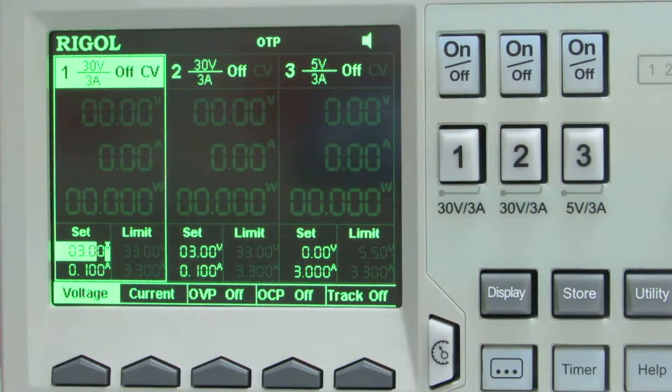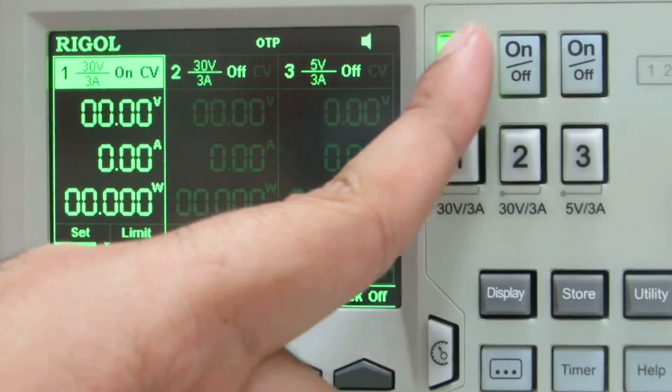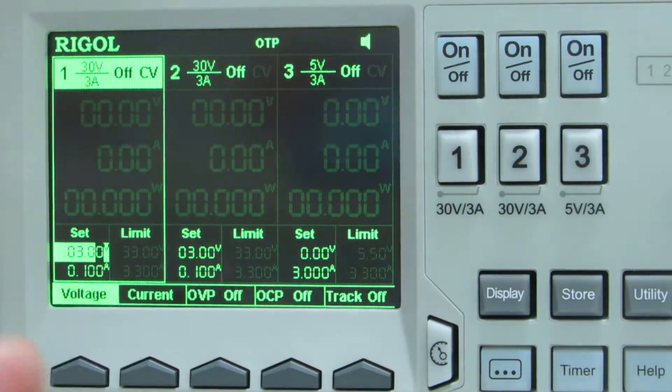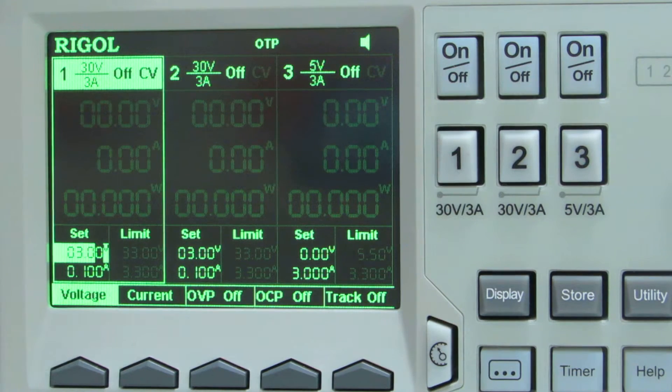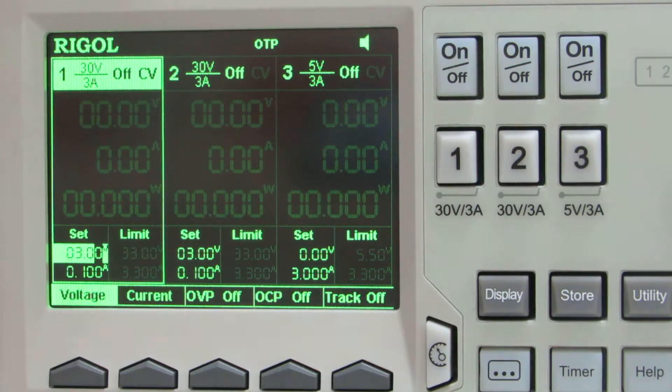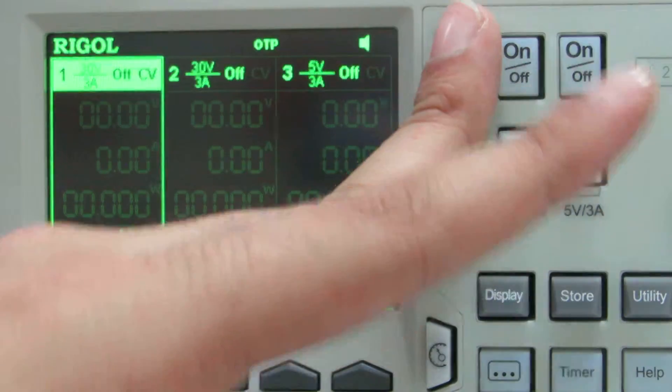Now each channel can be enabled or disabled by just pressing this on or off button. When you are normally working on a circuit in the lab, once you're done or you want to modify something in the circuit, you would just turn off the power, modify the circuit, and then turn it on again. In this one you don't have to do that. Since this is digital and it takes time to process and turn on again, you can use these buttons to enable the channel.